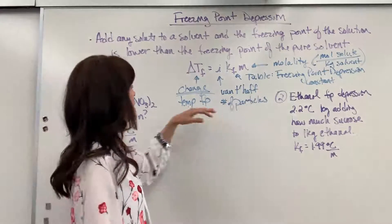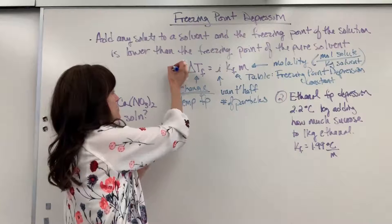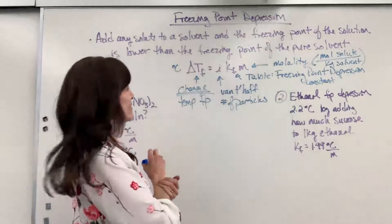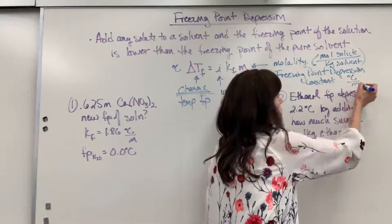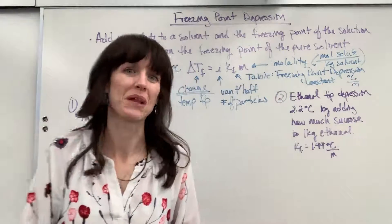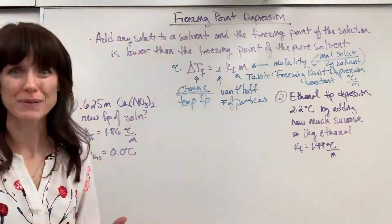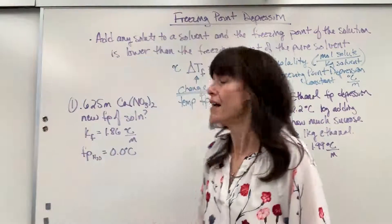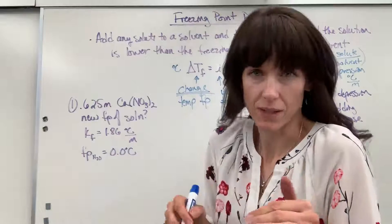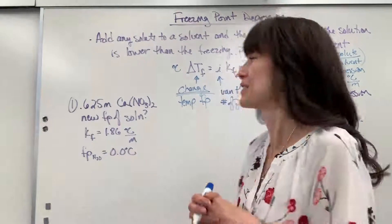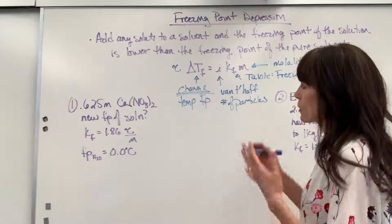I also wanted to add your delta T will be in degree C for the unit. And this KF is degree C per molal. So I like to do two problems for you. One's really straightforward. And the other one is maybe a little bit, is going to be the bonus one at the end of the chapter that gets a little star by it. It'll be a little bit harder.